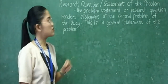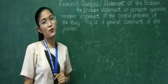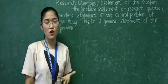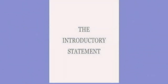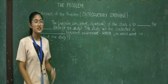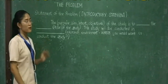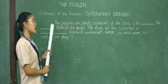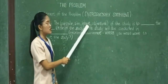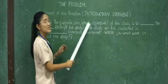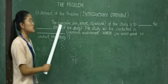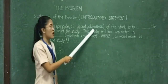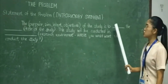The statement of the problem shows the purpose, aim, or objectives of your whole study or research. This is the central format of the introductory statement. We will start with the purpose, aim, intent, or objectives — you will choose any of these words enclosed in parentheses, whether purpose, aim, intent, or objectives — followed by 'of the study is to...'